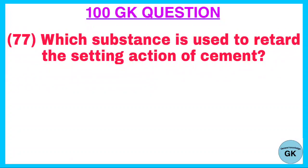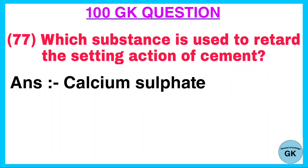Question. Which substance is used to retard the setting action of cement? Answer. Calcium sulfate.